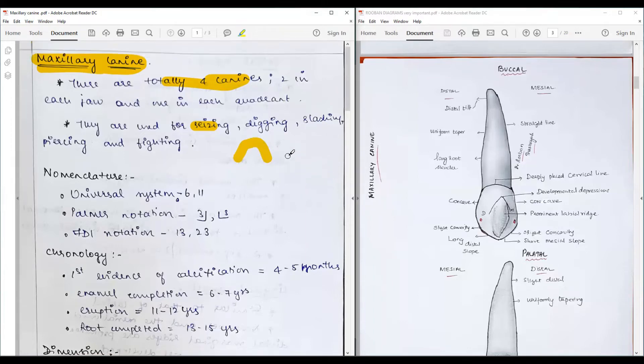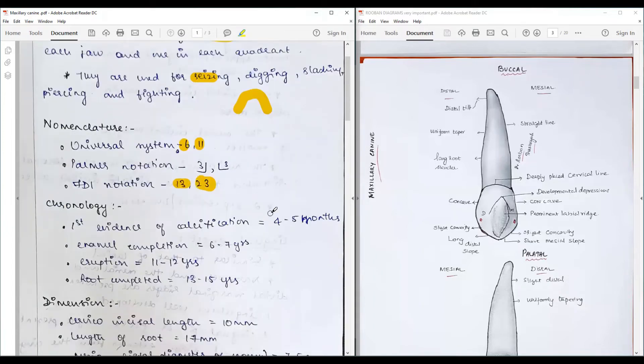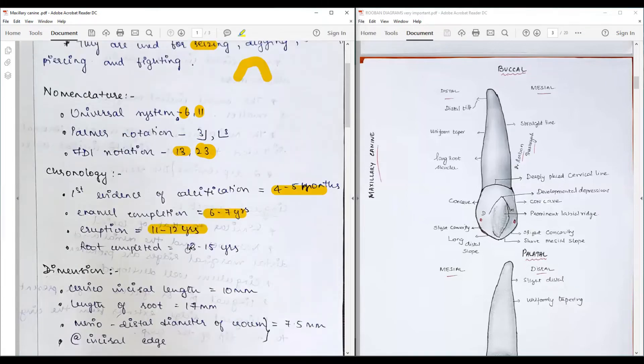Nomenclature: Maxillary canine under the universal system is tooth number 6 or 11. Palmer notation, FDI notation 1-3 or 2-3. The first evidence of calcification is seen about 4 to 5 months after birth. Enamel completion takes 6-7 years. Eruption happens at 11 to 12 years, and root completion may take another 2 to 3 years, at the age of about 13 to 15 years.